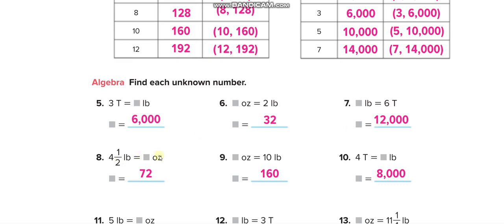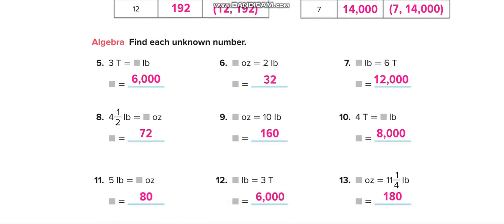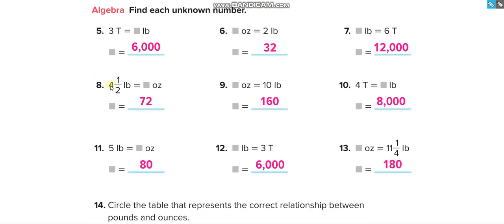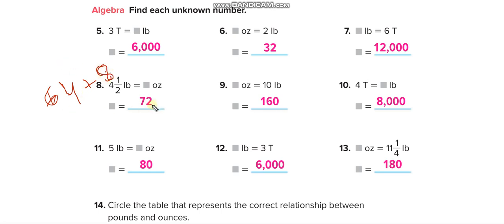For 4 and a half pounds, how many ounces? First convert the whole number, then the fraction, then add them together. 4 pounds: 4 times 16 equals 64. For the half pound: if 1 pound is 16 ounces, then half of 16 is 8. So 64 plus 8 equals 72 ounces.